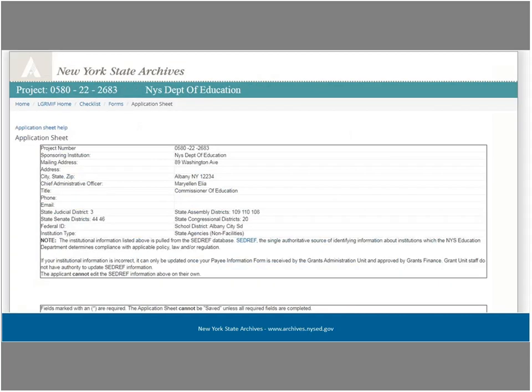The application sheet is where you enter certain information about your institution and your proposed project. The top part of the form is automatically populated with data about your institution drawn from the Education Department's Client Database, CEDREF. You cannot edit any of this information. If any information needs to be updated, such as the name of your CEO or an address, you need to submit a standard data capture form to the grants unit. Once we receive that form, we will update your record in CEDREF. We strongly encourage you to verify this information prior to submitting an application.